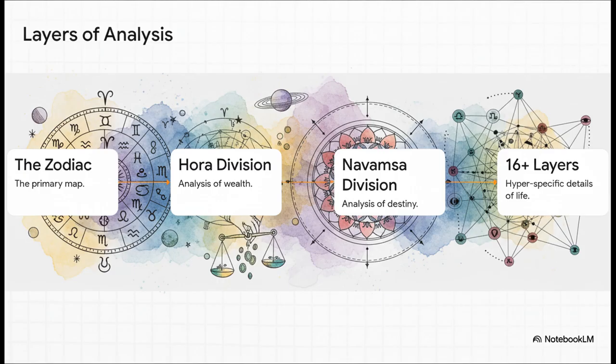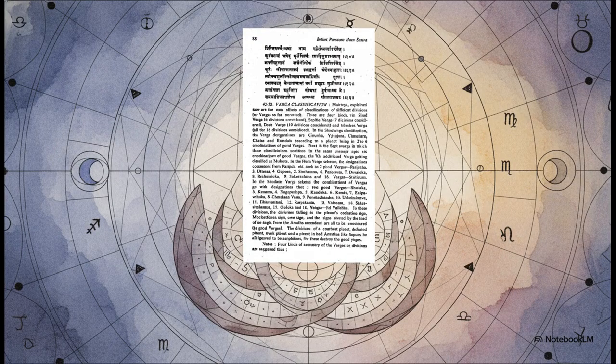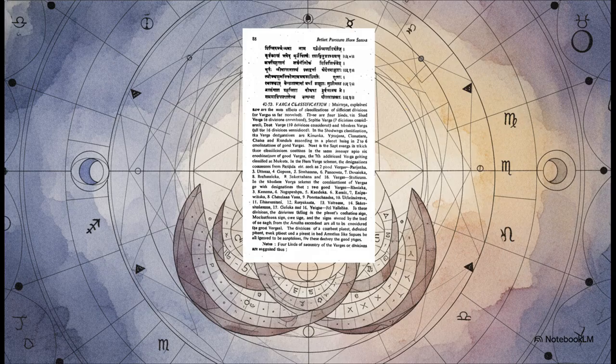The system allows for 16 or even more layers of analysis, each one revealing hyper-specific details about life. And this isn't some modern idea we're just tacking on. The original text explicitly lays out these schemes, like the one you see here, the Shoda Savarga, which details 16 different layers of analysis.